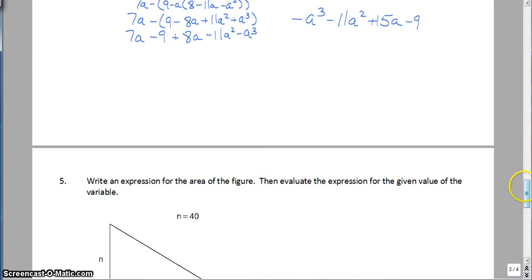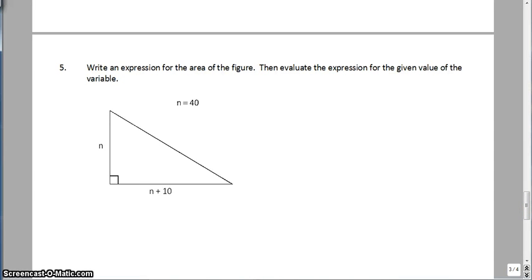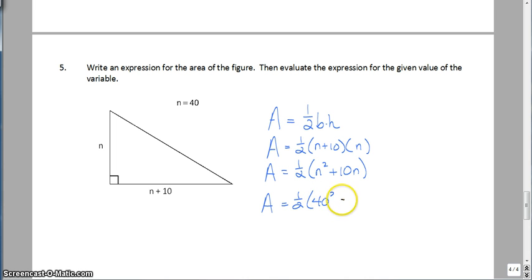Our last couple examples. Write an expression for the area of a figure. And then we're going to evaluate with the given value for our variable n. The area of a triangle is half the base times height. So half the base is n plus 10. The height is n. And now we can simplify it a little bit. All I did was distribute this. And then all we have to do is substitute in 40 for the number n. And we will get the answer of 1,000 units squared.